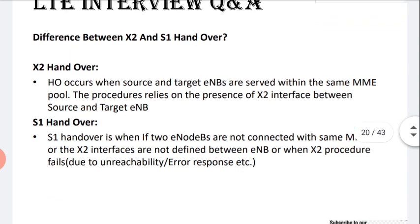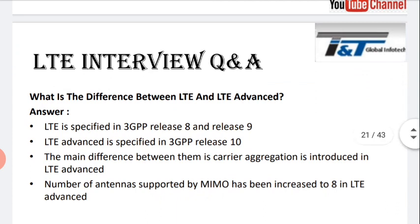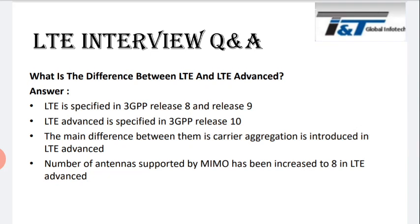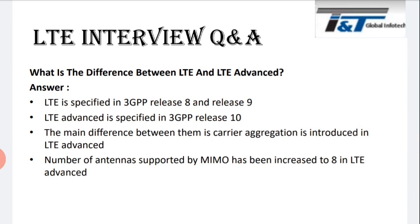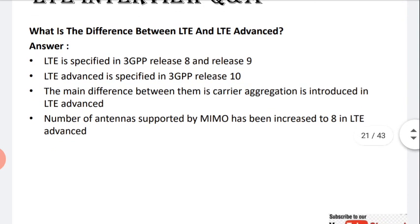The last question is: what is the difference between LTE and LTE Advanced? LTE is 3GPP Release 8 and 9, while LTE Advanced is 3GPP Release 10. The main difference is that carrier aggregation was introduced in LTE Advanced. Also, the number of antennas supported by MIMO has been increased to 8 in LTE Advanced.